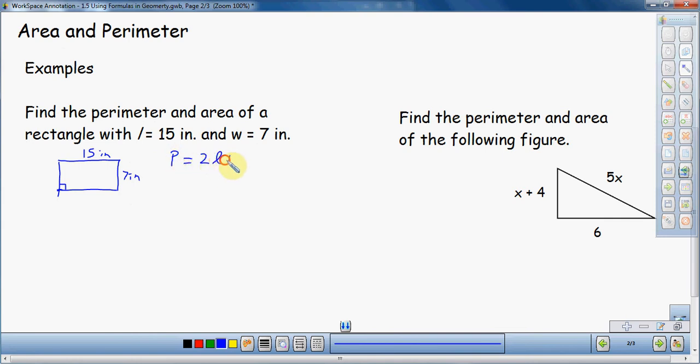Perimeter equals 2L plus 2W. The perimeter of a rectangle is twice the length plus twice the width. So perimeter is going to be 2 of the lengths, which is 15, plus 2 of the widths, which is 7. So 2 of the lengths is 30, plus 2 of the widths is 14. So my perimeter in this case is going to be 44 inches.